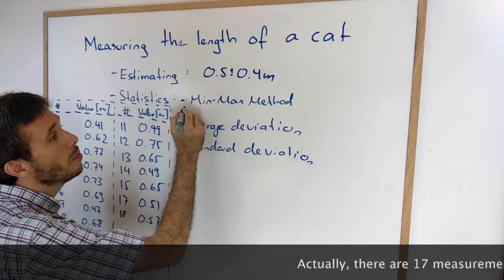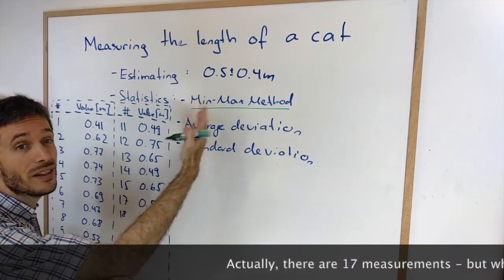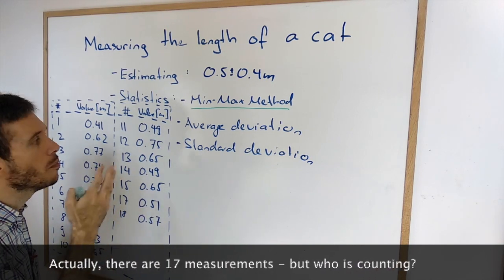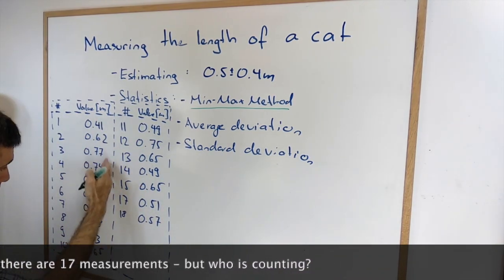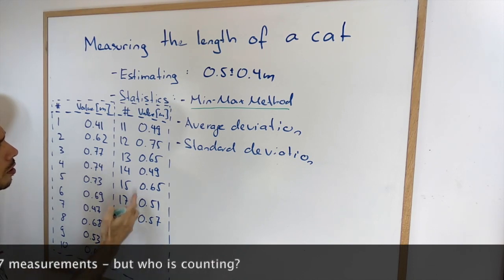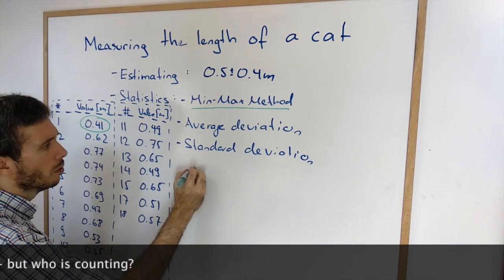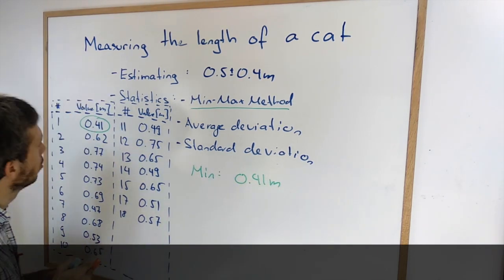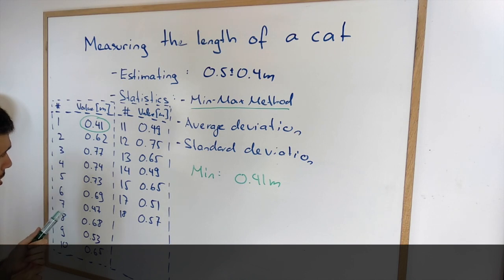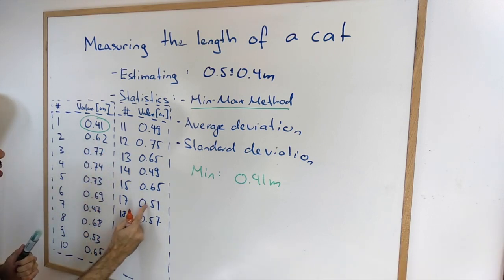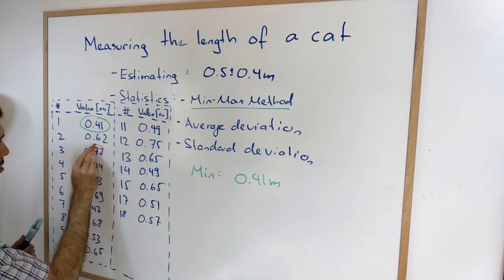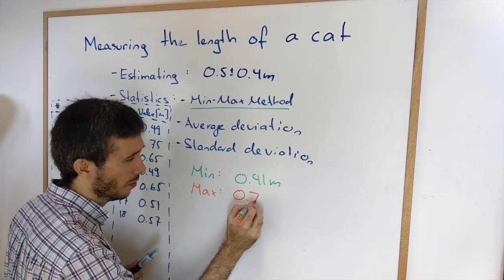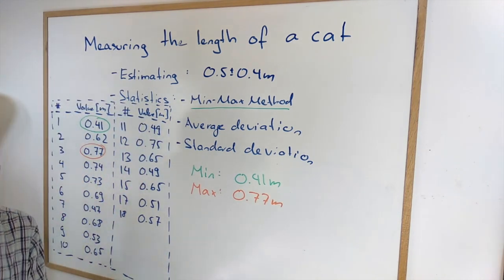So we're going to start with the min-max method. What we need in the min-max, as the name suggests, we need to figure out what is the maximum value and what is the minimum value of all the measurements. So I'm going to go through my numbers here. I'm looking for my minimum, which is 0.41 meters. And I'm going to look for my maximum, 0.77 meters. And now, how do we calculate?